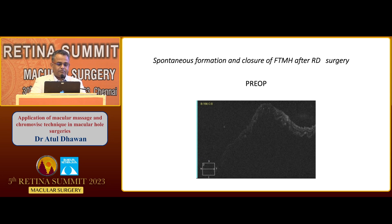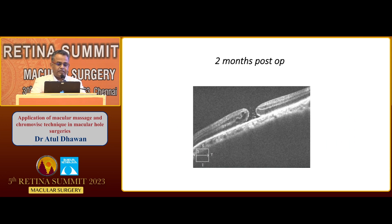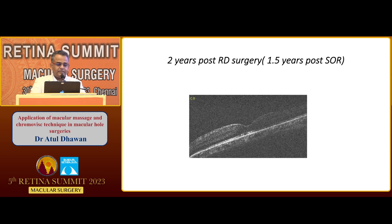We will take this case. This is the pre-op retinal detachment case. After one week, everything was fine. After two months, spontaneous hole opening was there. At that time, I decided to wait and watch, with ILM peeling at the time of SOR. After 3.5 months, you can see the glial sheath is there and hole closure started. This is a two-year post-op spontaneous closure of the hole, and the vision is 6/9 and 6 in this case.